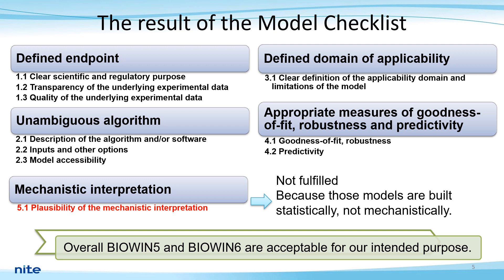According to principle 5 in the OECD principles for model validation, assessors should be associated with a mechanistic interpretation, if possible. Furthermore, according to guidance, for some regulatory purposes and without valid justification, models that don't fulfill all assessment elements can also be accepted. Hence, overall BioWin 5 and 6 are considered to be acceptable for our intended purposes.